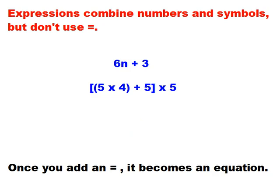You'll remember that expressions combine numbers and symbols, but they don't use an equal sign. So 6n plus 3 is an expression that means 6 times some quantity, and then add 3 more. You have a second expression: the product of 5 times 4 plus 5 together, times 5. Once you add an equal sign, it becomes an equation, which is a little bit different.